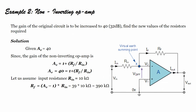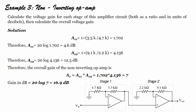Let us solve another problem: the gain of the circuit is to be increased to 40; find the required resistor values. Given AV = 40, and AV = 1 + RF/Rin, with Rin = 10 kΩ, we solve for RF. RF = (AV − 1) × Rin = 39 × 10 kΩ = 390 kΩ. This is straightforward — just substitute and solve.